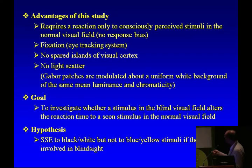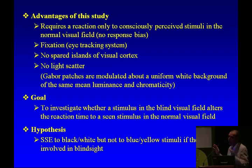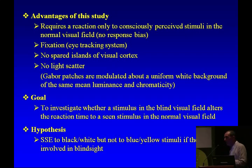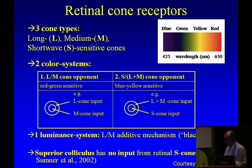The advantage of the study is that it requires a reaction only to consciously perceived stimuli. From a conscious response, we can infer unconscious abilities. There's fixation, no spared islands of visual cortex, and no light scatter. We then pushed further by using, instead of conventional black and white stimuli, blue and yellow stimuli, comparing black-and-white versus blue-yellow. If the superior colliculus is involved, we would expect responses above chance with black and white stimuli but at chance with blue and yellow, since the superior colliculus has no input from retinal S-cones — it is blind to blue-yellow stimuli.